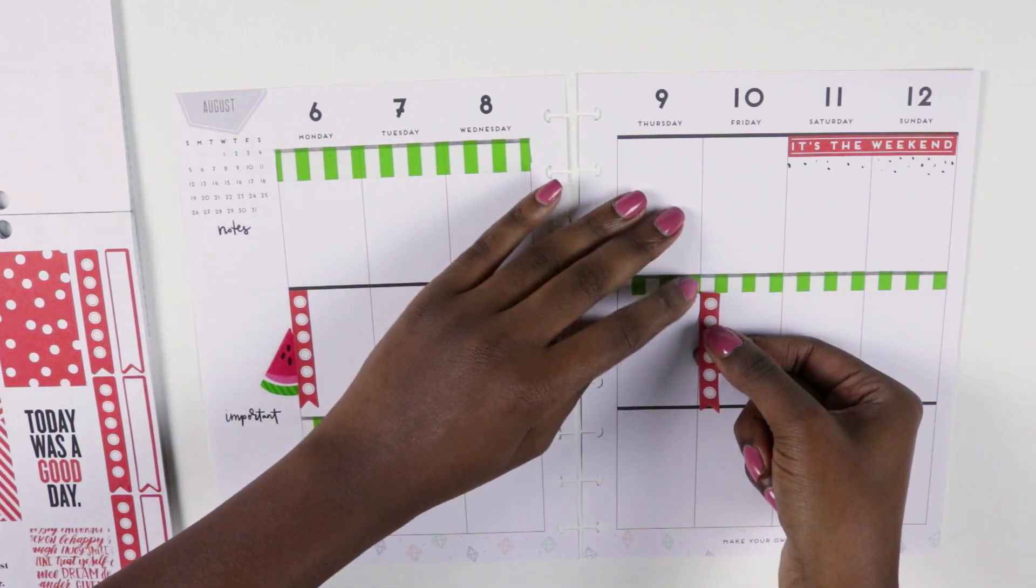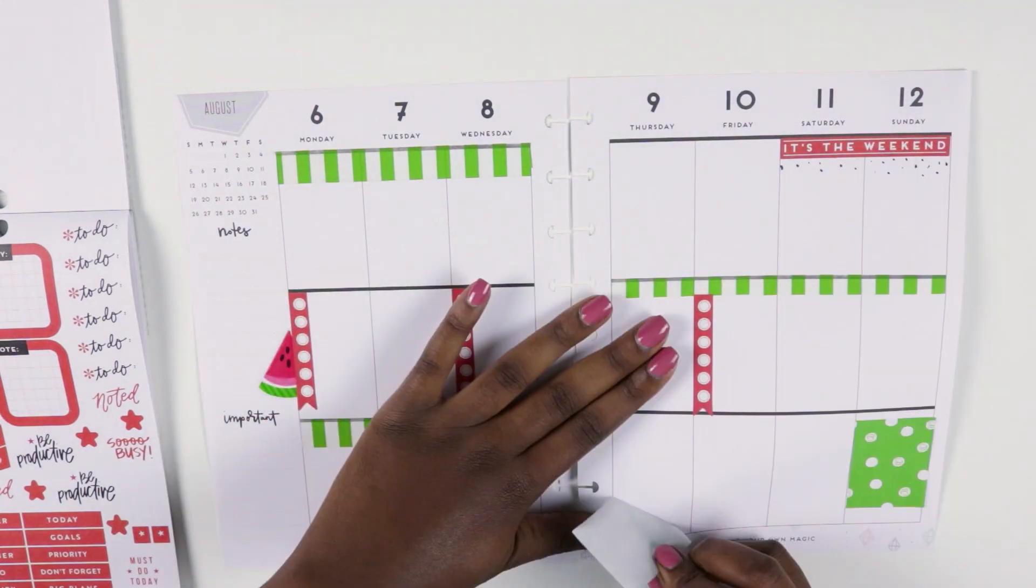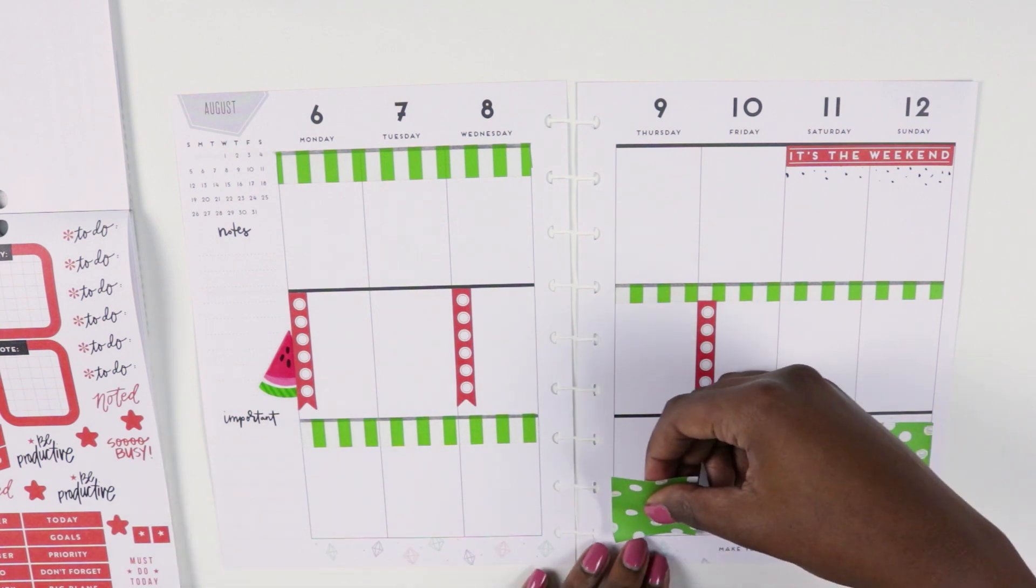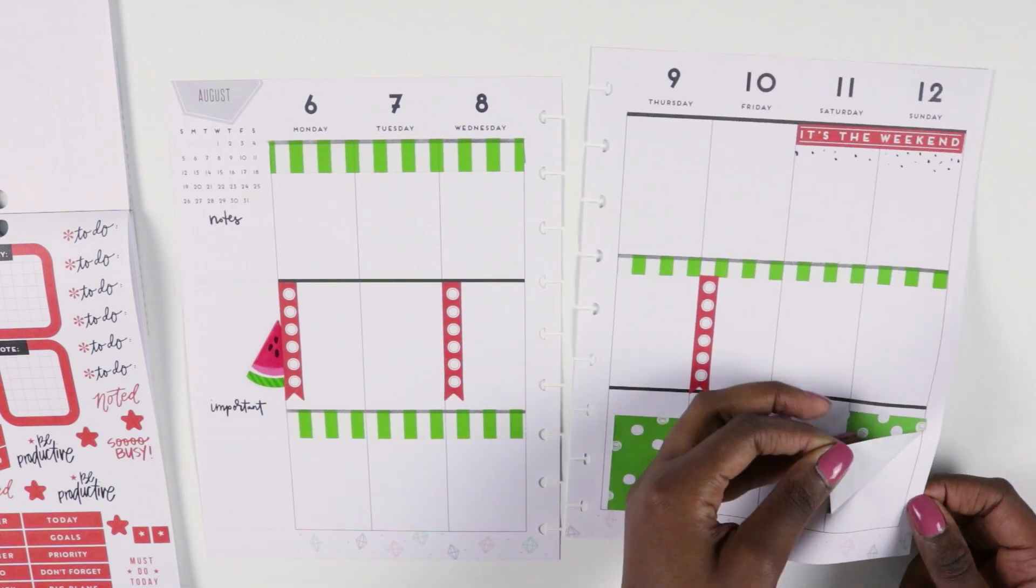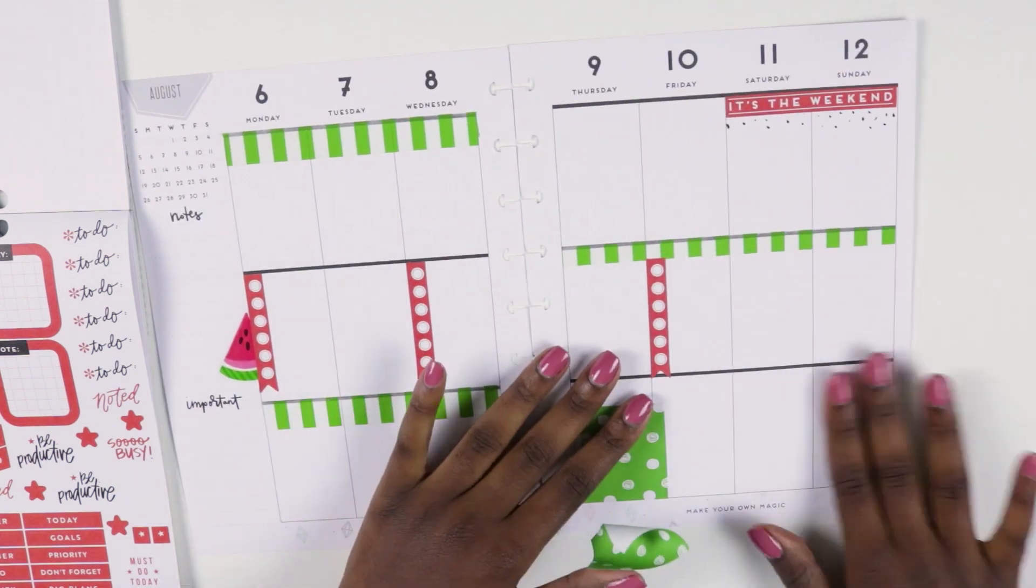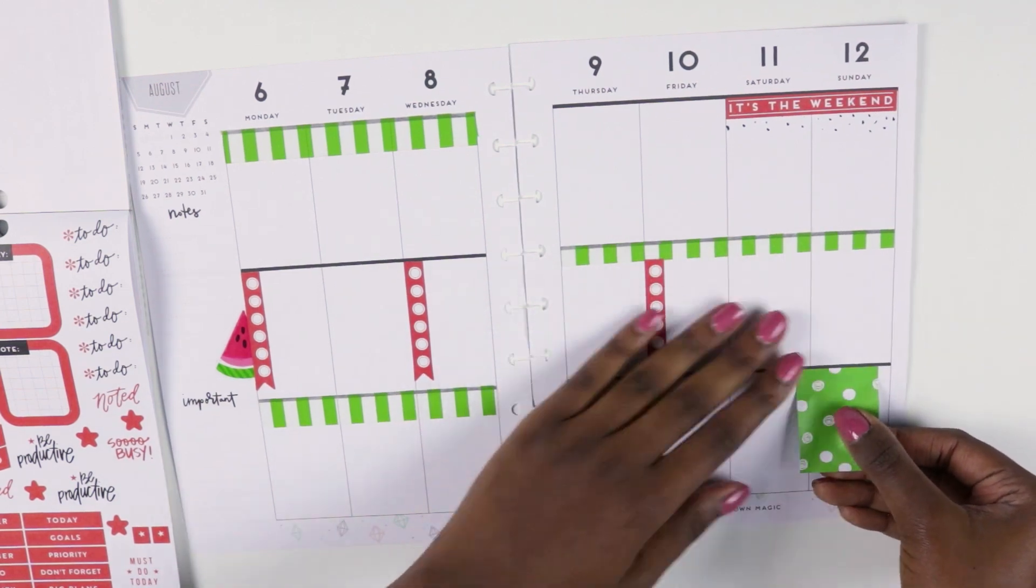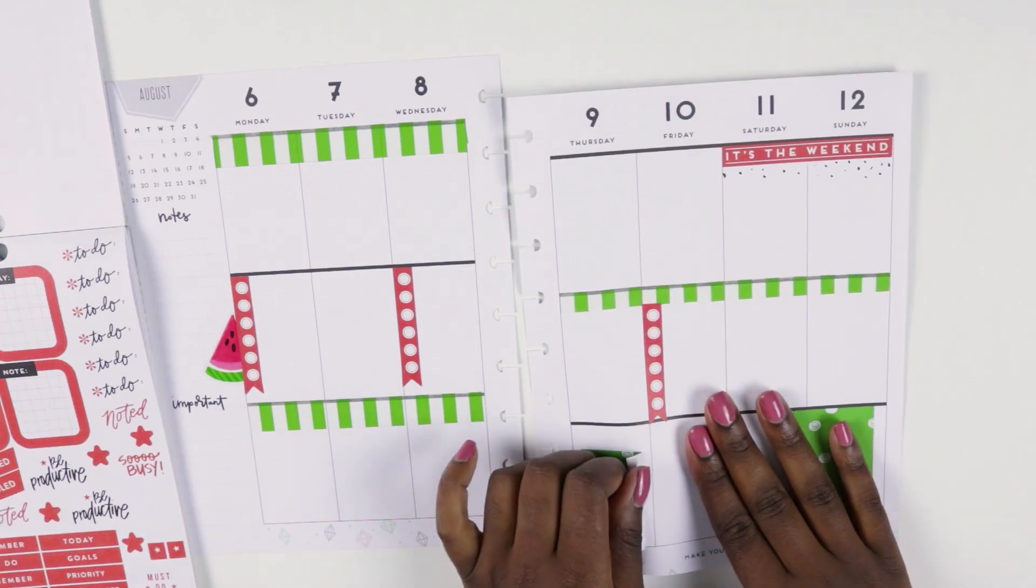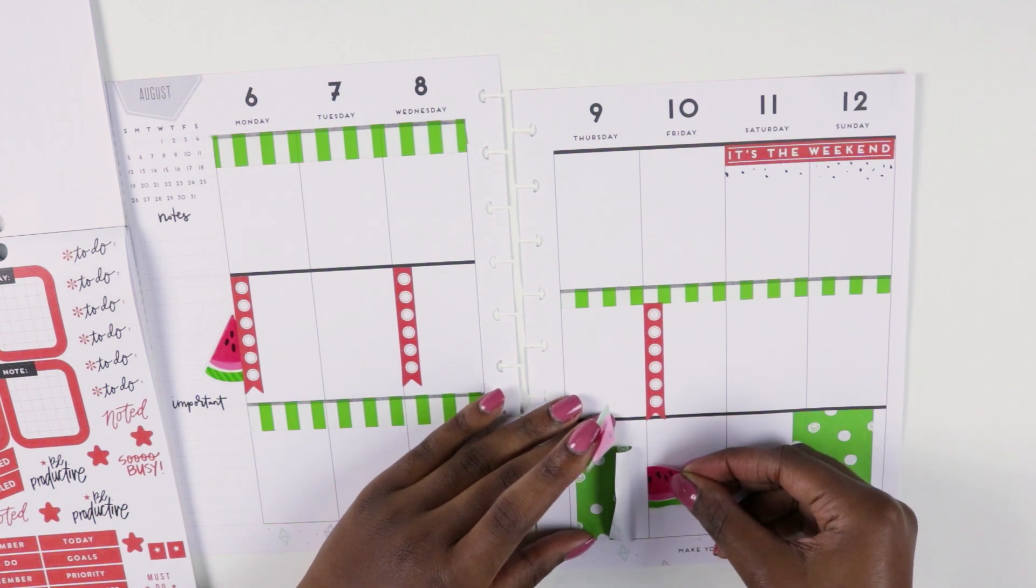Next I'm taking the Memory Keeping A Year of Memories sticker book and I'm taking this green full box. I think this was in the spring section and I'm cutting it down in half to place it on Sunday and Thursday. And then I'm taking a watermelon sticker and just placing that on the side of Thursday's box.